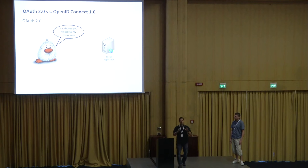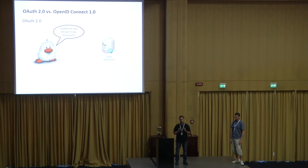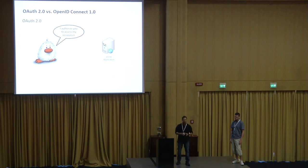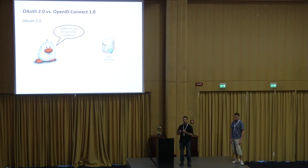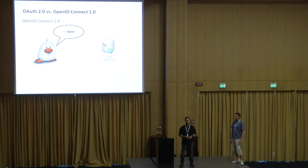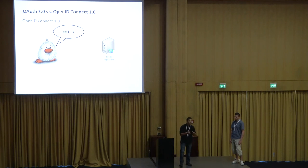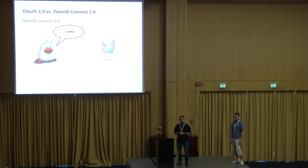First, I want to explain the difference between OAuth and OpenID Connect because there is a misunderstanding in the world. OAuth was designed not for authentication, but for authorization. Authorization means I authorize some web service, web application, or mobile app to access my resources on a third party — for example, Facebook, Google, and so on. OpenID Connect was designed for authentication: I'm authenticating on a client web service or web application, presenting my identity, and I can access some resources on this client. That's the main difference between OAuth and OpenID Connect.